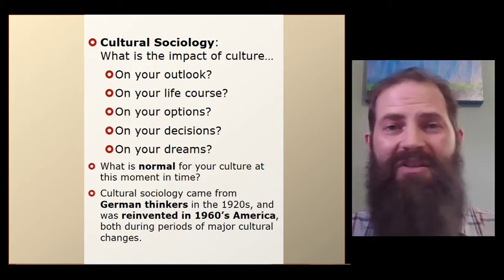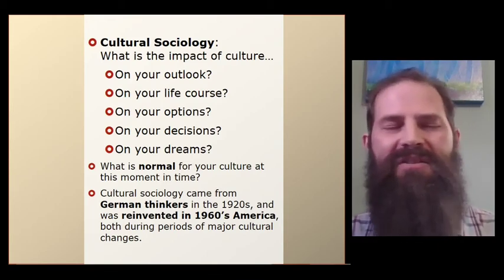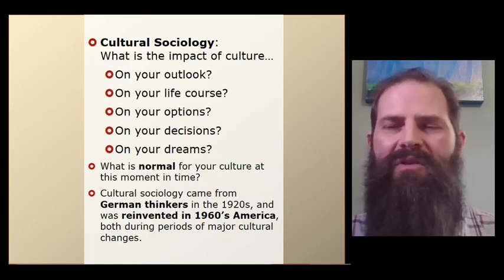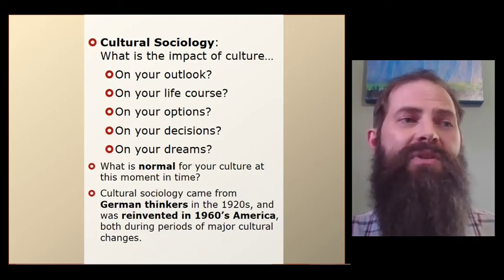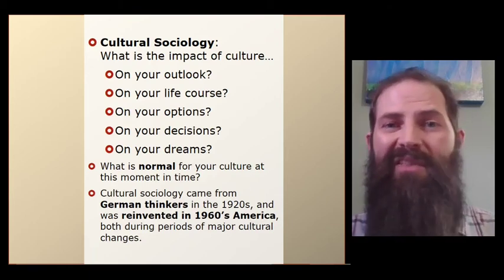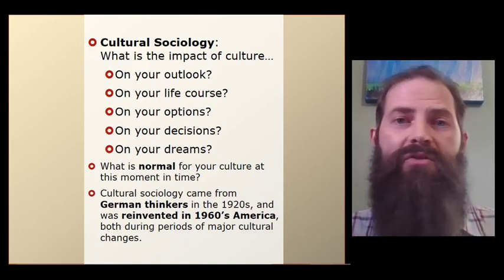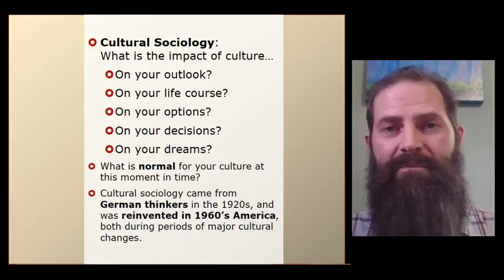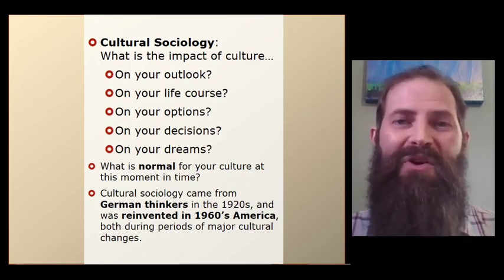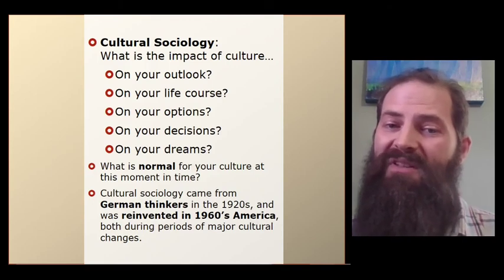Cultural sociology covers a lot of territory in trying to understand how culture works. For a cultural sociologist, they look at groups of individuals from a particular culture and ask themselves: to what degree has that culture shaped members' outlook on life, their life course from birth to death, the options they think are viable choices, the decisions they might make, even the dreams that they have. Your culture shapes the things that you aspire to become. Moreover, culture tells us what is normal.